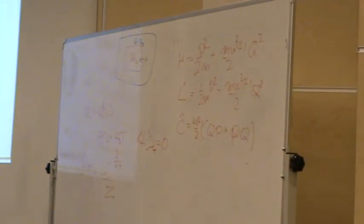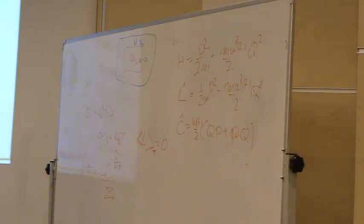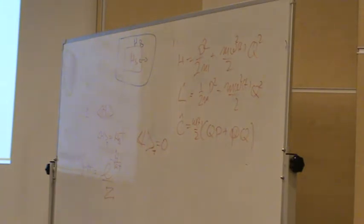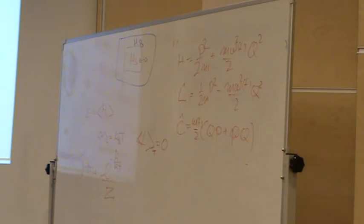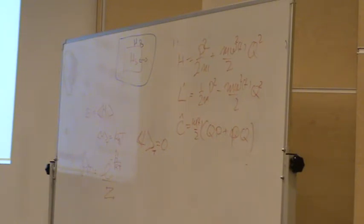A student asks: how do we know the equipartition holds even in the quantum case? For the harmonic oscillator it does, but it's not general. For the harmonic oscillator, equal partition works, and in a way all these extra operators have to be zero. We need to develop the algebra to understand the commutators and why this is so.